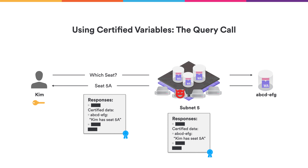It is possible to do a query call and still get an authenticated response, using a feature we call certified variables. An important thing upfront: this now requires collaboration from the canister. To certify update calls, canister and application developers didn't have to do anything special — it just works out of the box. To secure query calls using certified variables, the canister must assist. Already when the user does the booking, the canister records in a special area of the system state that Kim has booked seat 5A — telling the system to remember and sign that for it. This is stored separately from the canister's normal state; it's written into the same document that records all the responses, which is signed by the subnet using the blue ribbon.